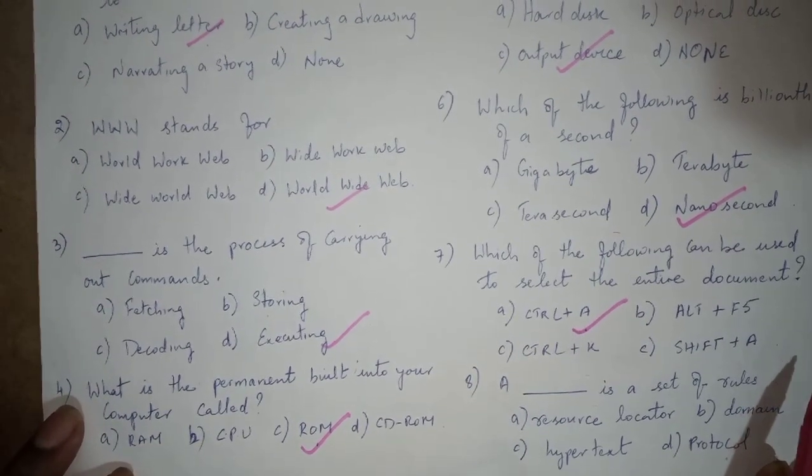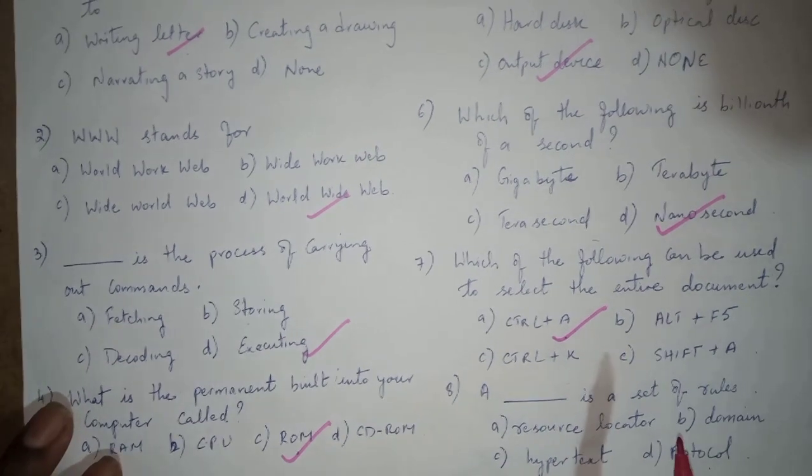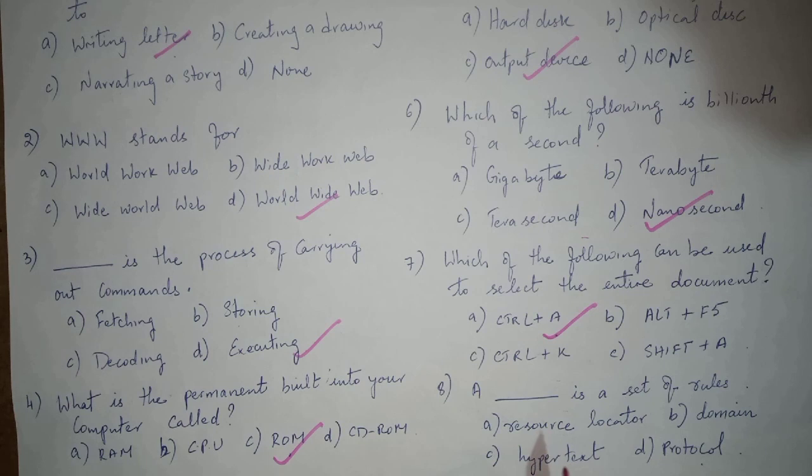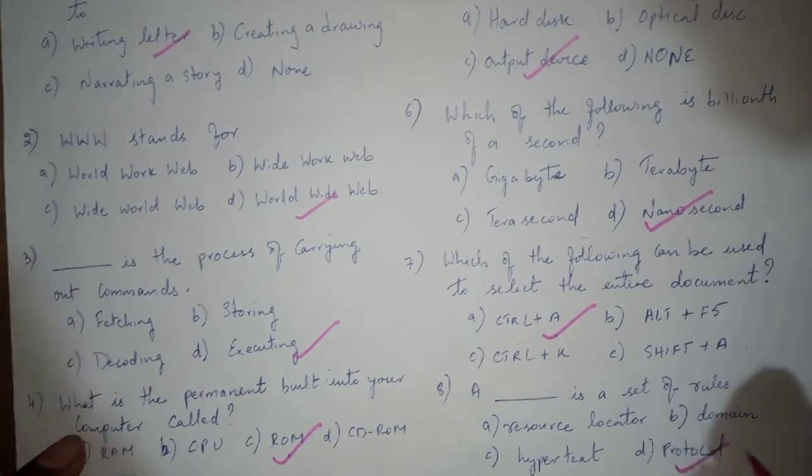Next question is: a dash is a set of rules. Options: resource locator, domain, hypertext, protocol. And the answer is option D, which is protocol.